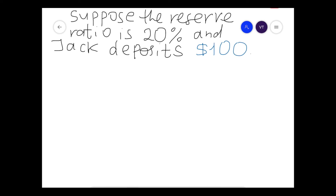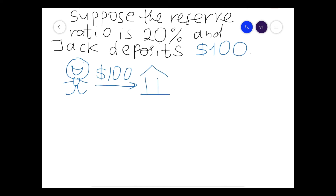Here is how money creation works. Suppose the reserve ratio is 20% and Jack deposits $100. The bank takes his $100 and divides it into two parts: it reserves 20% — that's $20 — and lends out the rest.